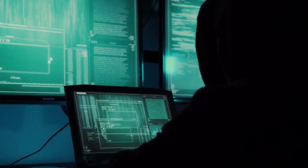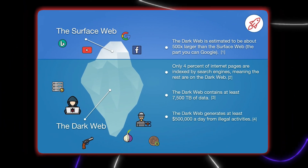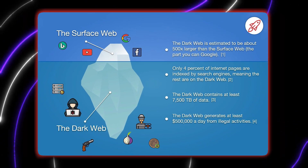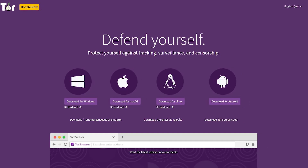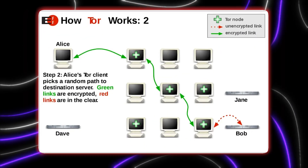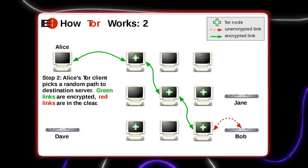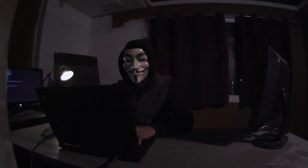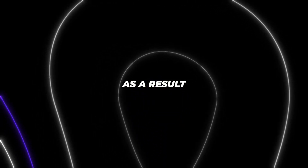The dark web is a section of the internet that search engines like Google cannot locate, and it cannot be accessed with a standard web browser. To access the dark web, you must use specialized software like Tor. Tor also conceals both the client's and the server's IP addresses, which allows the dark web to be a place where people can be anonymous. As a result, it's also difficult to access and control.